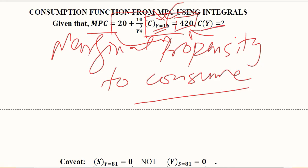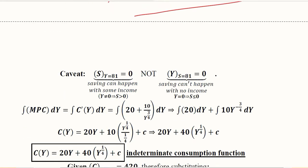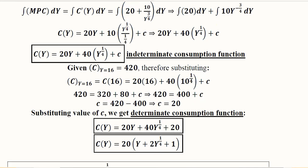We can find the consumption function here. The process is straightforward. We will find the integral of the marginal propensity to consume with respect to Y. This is smooth sailing because it's simply integration using the power rule and sum rule.